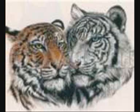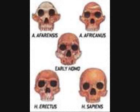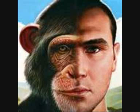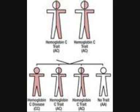Evolution occurs when these heritable differences become more common or rare in a population. Two major mechanisms drive evolution. The first is natural selection — a process causing heritable traits that are helpful for survival and reproduction to become more common in a population, and harmful traits to become more rare. This occurs because individuals with advantageous traits are more likely to reproduce, so that more individuals in the next generation inherit these traits.